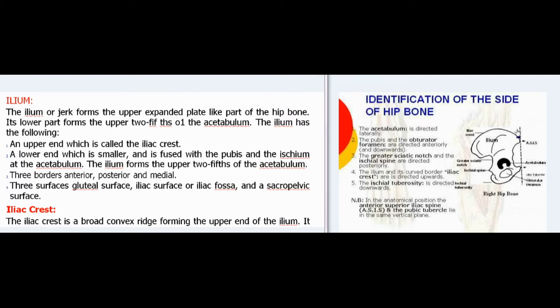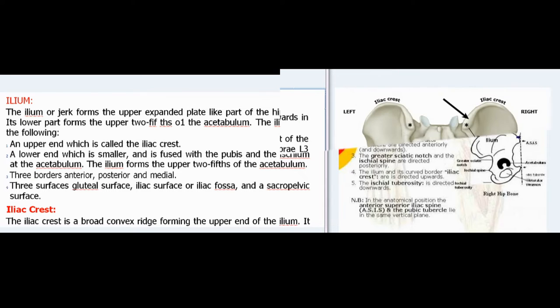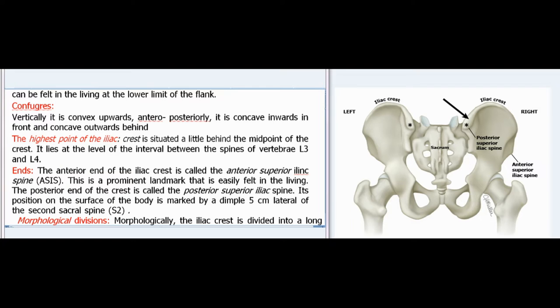The ilium forms the upper expanded plate-like part of the hip bone. Its lower part forms the upper two-fifths of the acetabulum. The ilium has: an upper end called the iliac crest, a lower end fused with the pubis and ischium at the acetabulum, three borders (anterior, posterior, and medial), and three surfaces (gluteal surface, iliac surface or iliac fossa, and sacropelvic surface). The iliac crest is a broad convex ridge forming the upper end of the ilium, felt in the living at the lower limit of the flank.